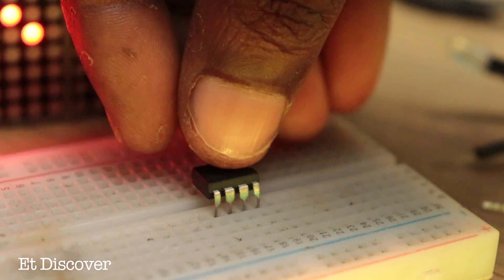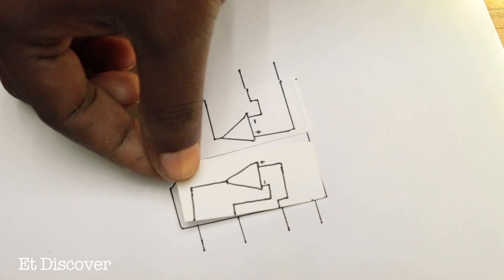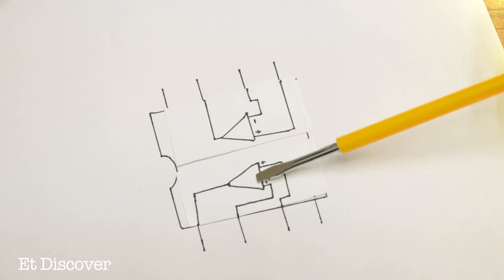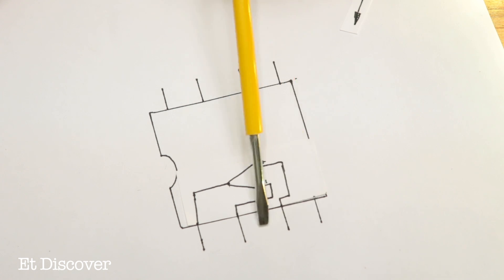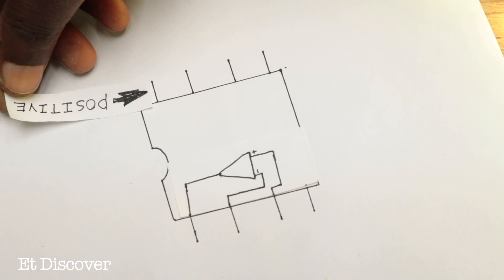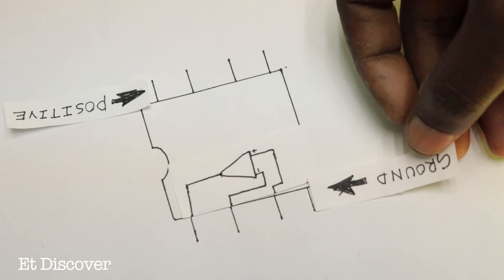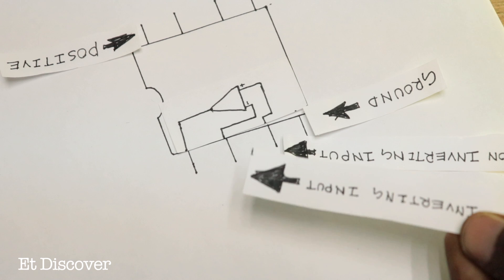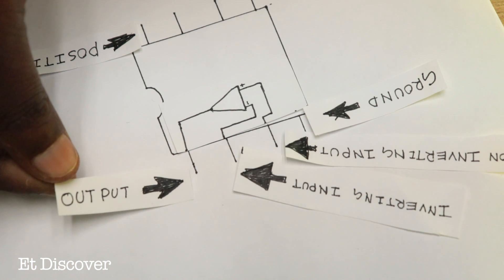I used an LM338 op-amp IC here. This IC is divided into two op-amps. I need one op-amp here, so I will just use the op-amp right here. I will only use these four pins. This is the positive pin, and this IC can take up to 30 volts. This is the negative pin. The number 3 pin is the non-inverting input pin. On the other hand, number 2 pin is the inverting input pin. The last one is the output.